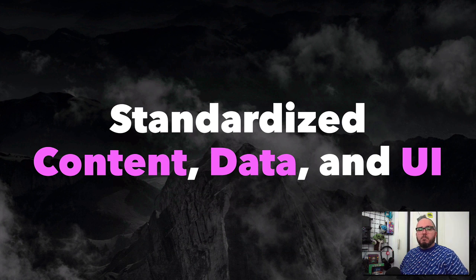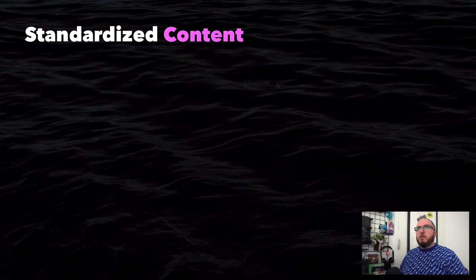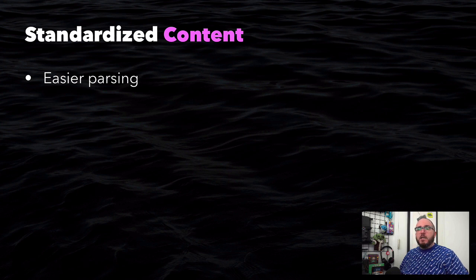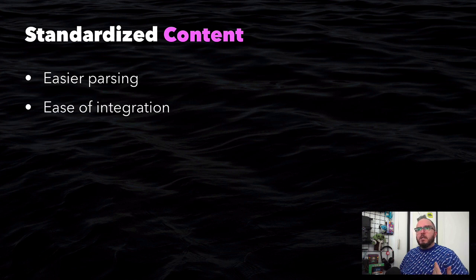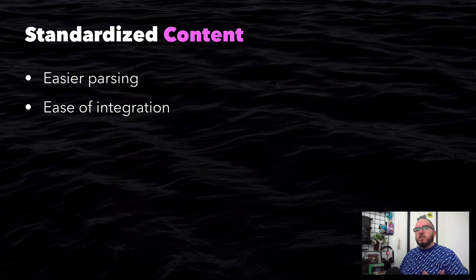What else comes with Gutenberg? Standardized content, data, and user interfaces. The new editor stores all of the content in a serialized string, which makes for easier parsing. It allows for ease of integration because we have one place to go get the content — we're not going through a bunch of meta fields created by custom fields or different custom databases. It's stored in one place, or we could store it in external APIs.